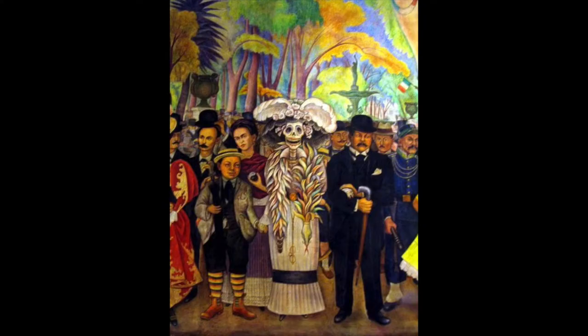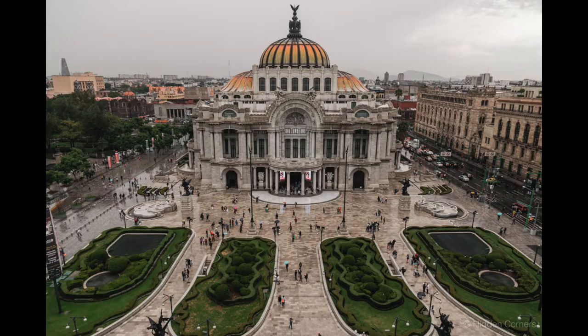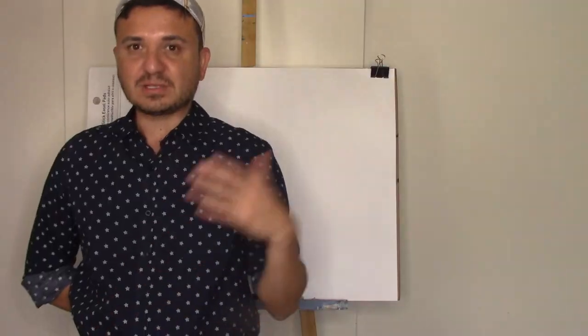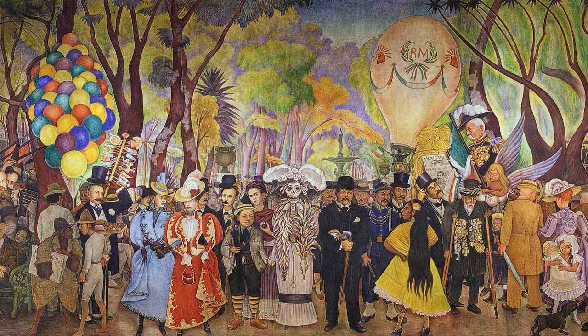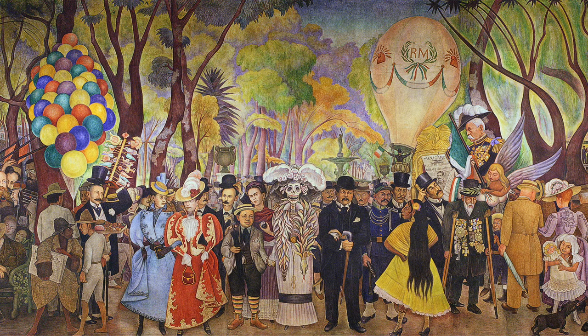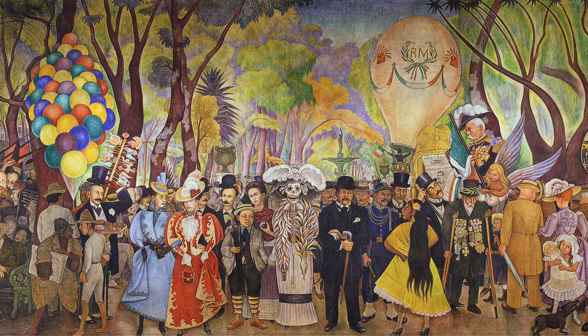Then Diego Rivera, who was married to one of my favorite artists Frida Kahlo, was actually a big fan of La Calavera Garbancera. So he introduced it in one of his works. In 1947 he painted the mural titled Dream of a Sunday Afternoon in the Alameda Central.